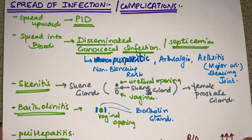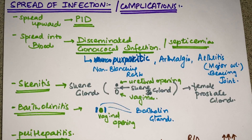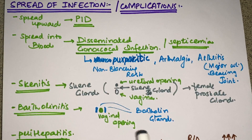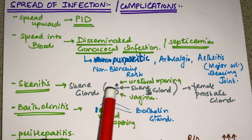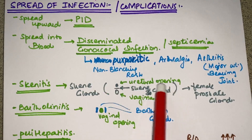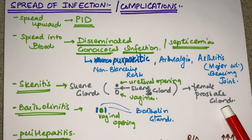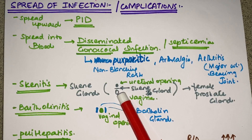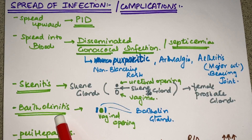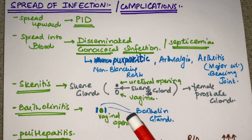Now talking about how this disease spreads and its complications. If we remember the anatomy of the pelvic area, there are two major glands: the Skene's glands, present between the urethral opening and the anterior wall of the vagina — infection can spread to this gland leading to skenitis, which is the female prostate gland — and the Bartholin glands, a pair of glands around the vaginal opening.